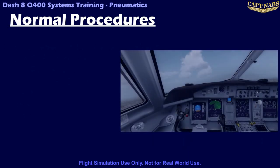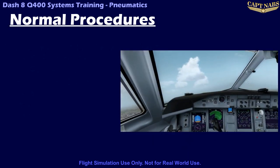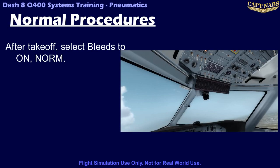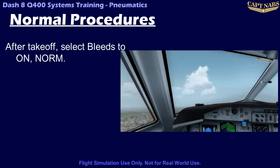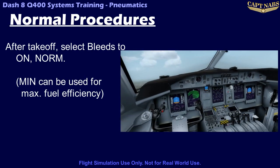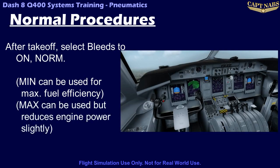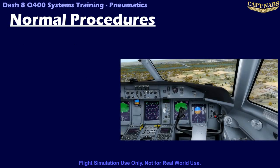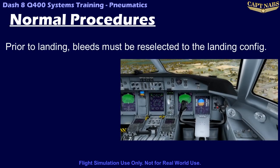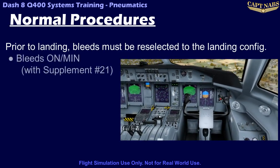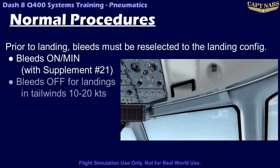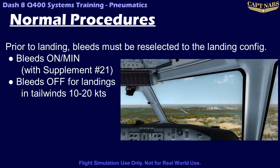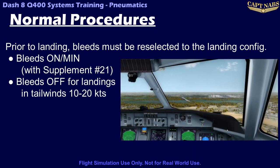Once the takeoff is complete, usually right after flap retraction, the bleed system can be reconfigured as required. Usually the bleeds are selected on and norm for most flights, though max can be used if higher airflow to the cabin is needed, though it does cause a decrease in engine power. Prior to landing, bleeds must be configured for landing again. The bleeds are normally on for most landings, except for tailwinds between 10 and 20 knots or landing gear extended ferry flights, as mentioned in the supplement compatibility discussion under limitations.